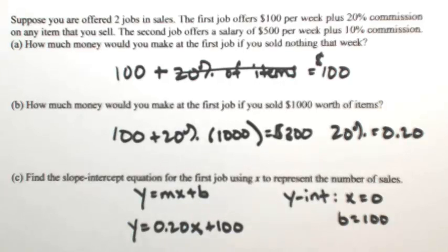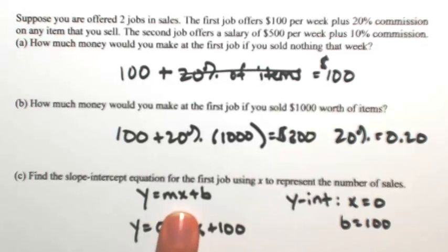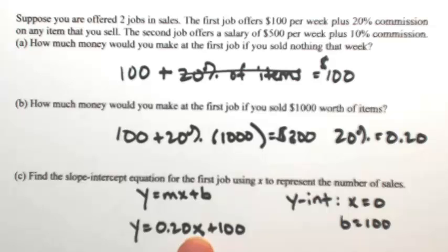You can check that quickly. If I sell nothing, x is 0, so you get $100. If I sell $1,000, you take 20% of 1000 plus 100 — that is exactly what we calculated in part b.